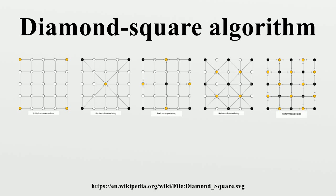The diamond step: for each square in the array, set the midpoint of that square to be the average of the four corner points plus a random value. The square step: for each diamond in the array, set the midpoint of that diamond to be the average of the four corner points plus a random value.